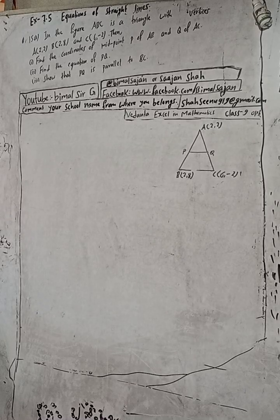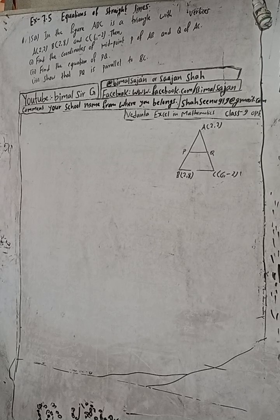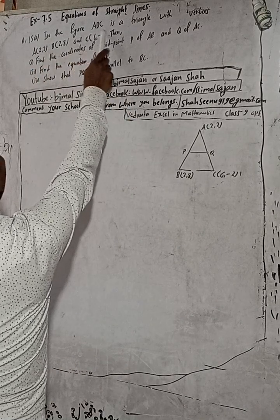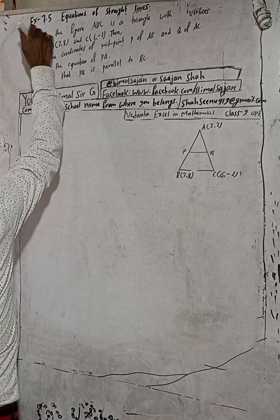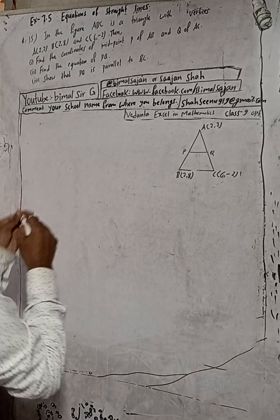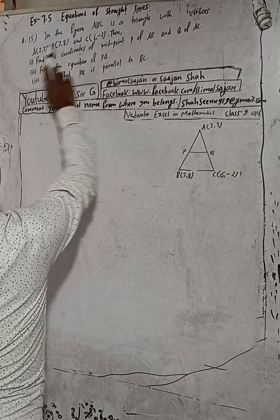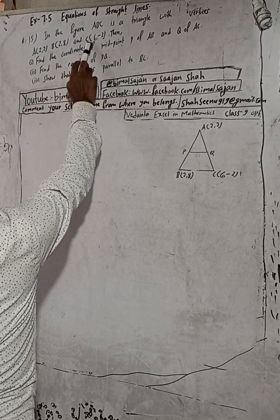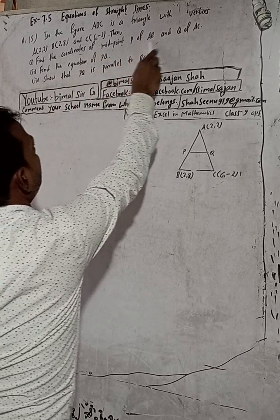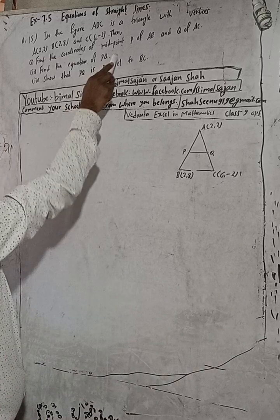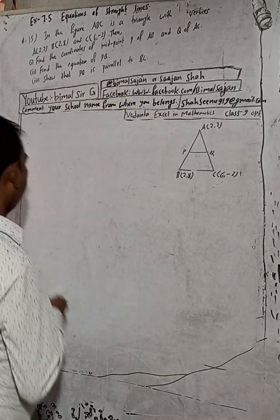Hi class 9 and 10 students, welcome back to Gimbal Sarji YouTube channel. This is question number 15a, exercise 7.5, equations of a straight line, class 9. In the given figure, ABC is a triangle with vertices A(2,2), B(2,8), C(6,-2). P and Q are midpoints, and PQ is parallel to BC.